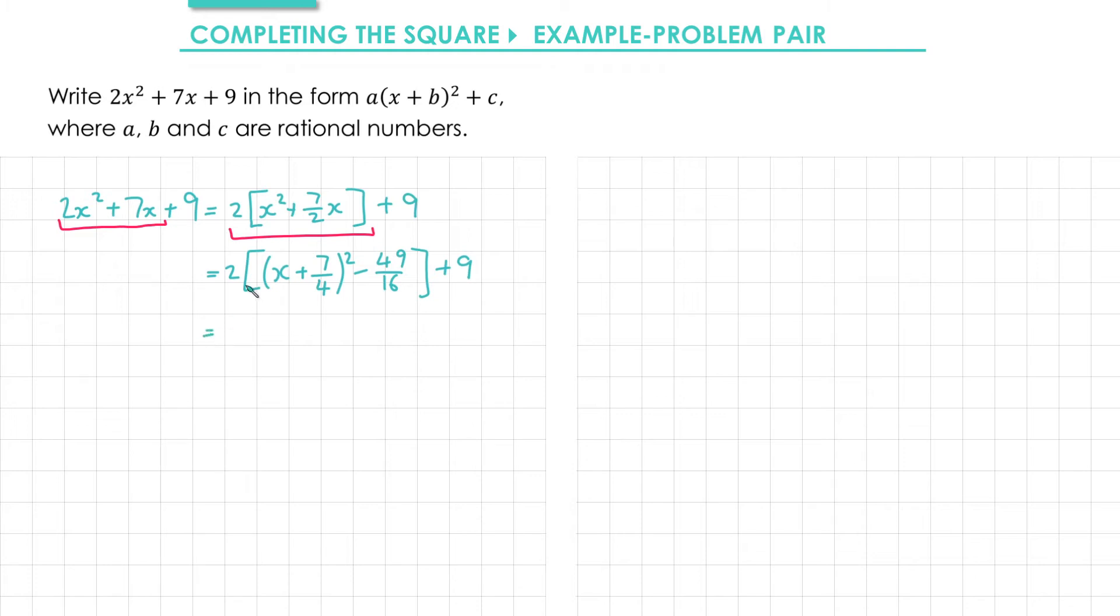Next I'm going to expand out these square brackets. So I've got 2 times this first bracket, 2 lots of x plus 7 over 4 squared and I've got 2 times minus 49 over 16. Multiplying that over 2 gives us 49 over 8. At this point it's useful to rewrite the 9. 9 can be written as 72 over 8.